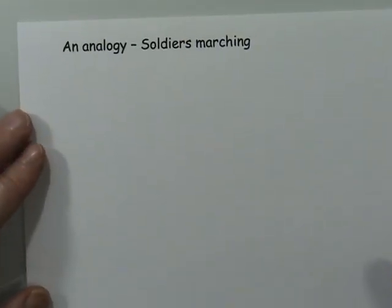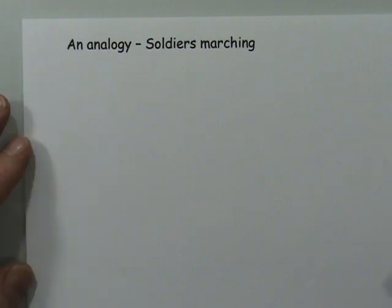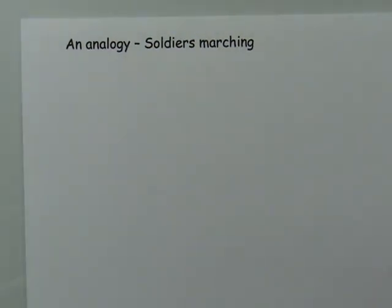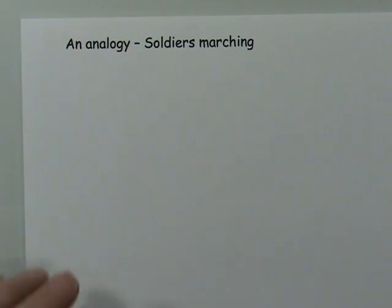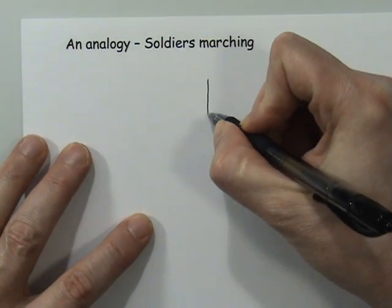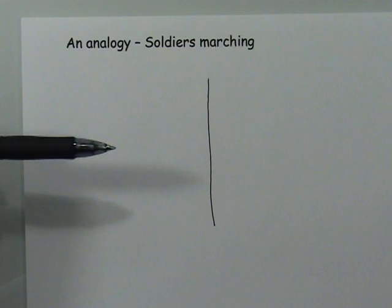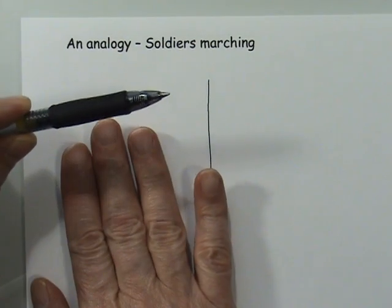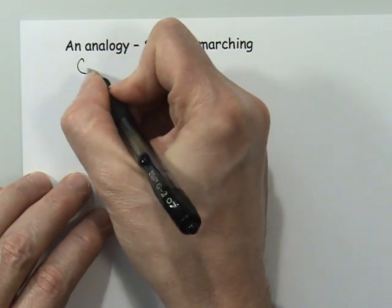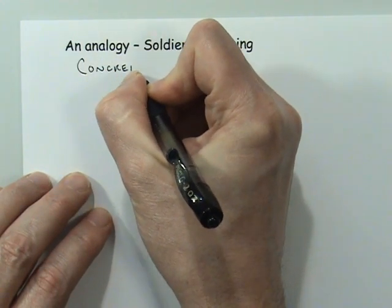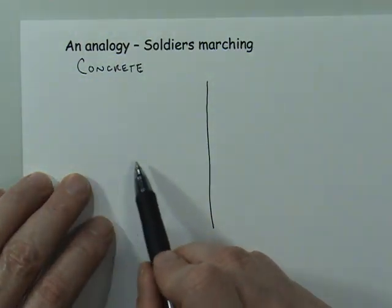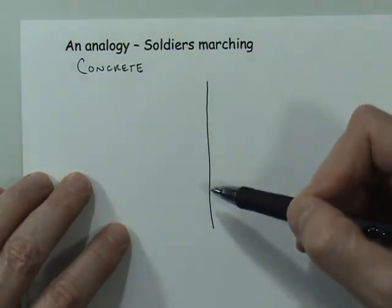To help you understand this concept, I'm going to use something that is not waves at all — I'm going to use soldiers marching. We're going to treat the soldiers as though they are the crests of a wave, so each soldier represents the position of a crest. I'm going to split my paper in half and imagine two sides, sending soldiers marching across the page from one medium — concrete — smoothly transitioning into sand.